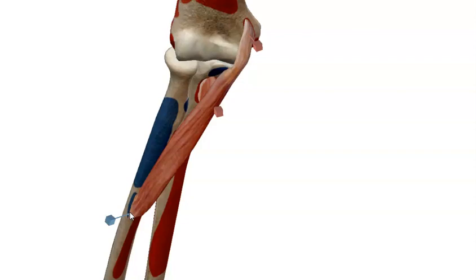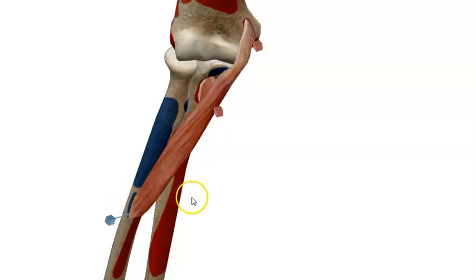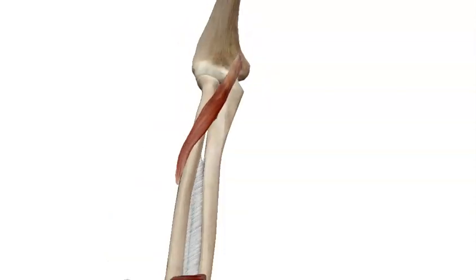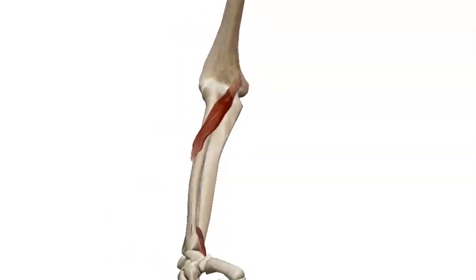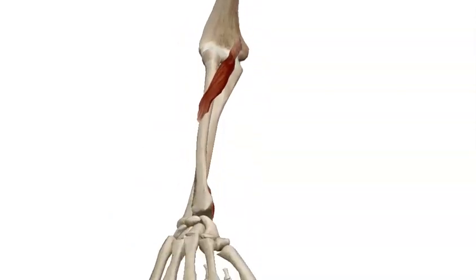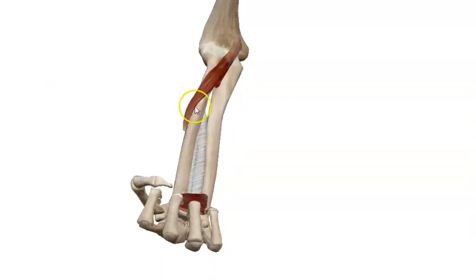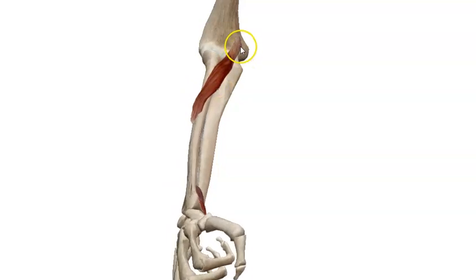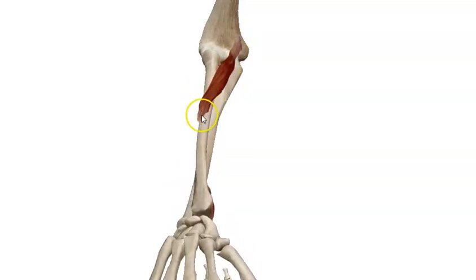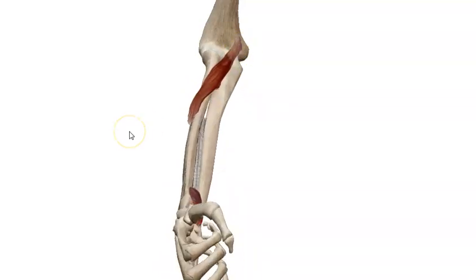If we approximate the insertion and origin, the muscle will rotate the radius — this movement is called pronation. As you can see, this is the pronation movement formed by pronator teres, which originates from the humerus and ulna and inserts into the radius.